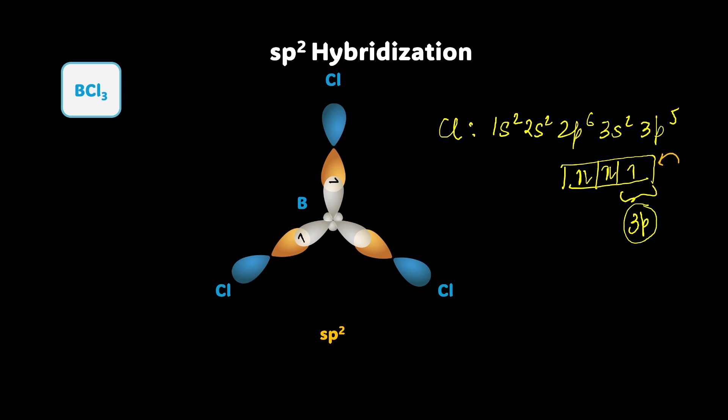Now if you see, these are the three sets of the sp2 hybrid orbitals that has been formed, each having one electron of boron. So this is how the bonded electrons look like. These are the bonding regions. So now you can recollect that why we have shown this as a major lobe or the bigger lobe because that's where the electron density is maximum. This whole results in the trigonal planar structure of BCl3.